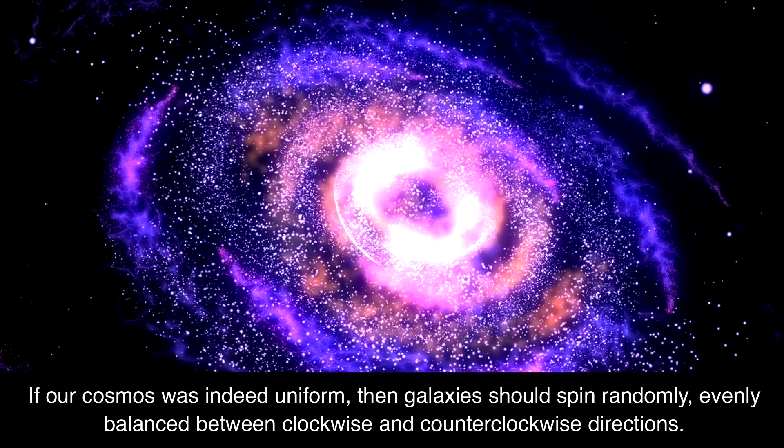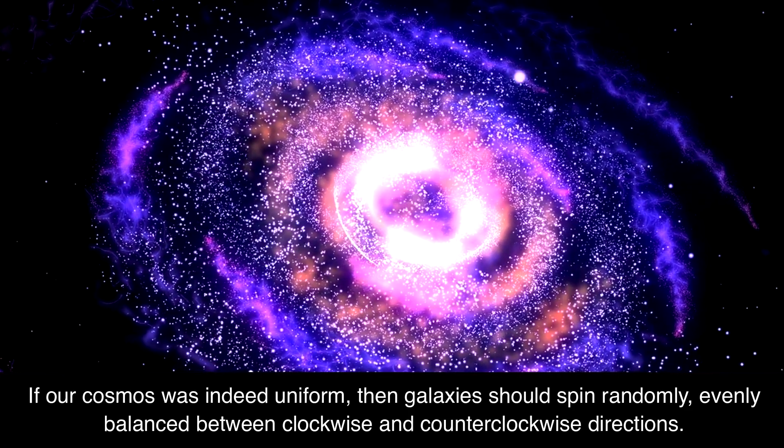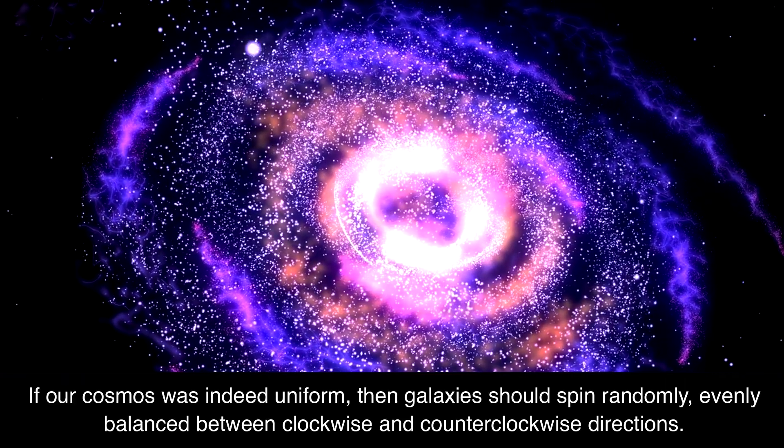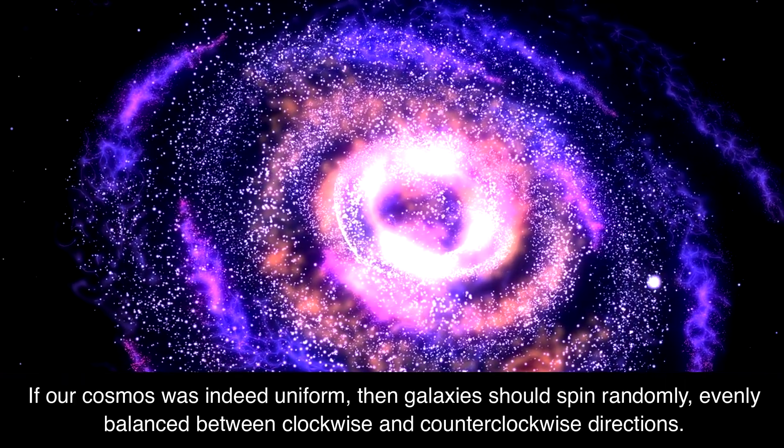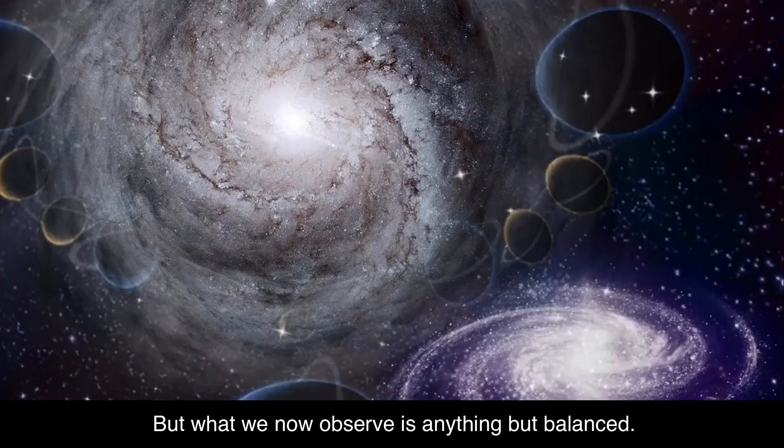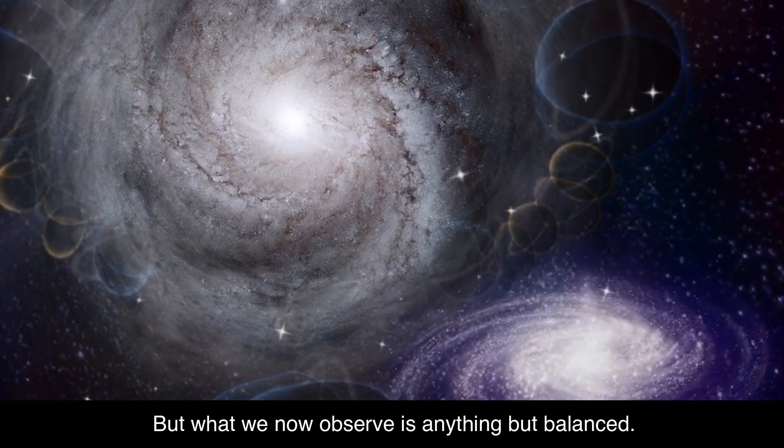If our cosmos was indeed uniform, then galaxies should spin randomly, evenly balanced between clockwise and counterclockwise directions. But what we now observe is anything but balanced.